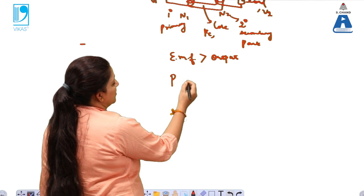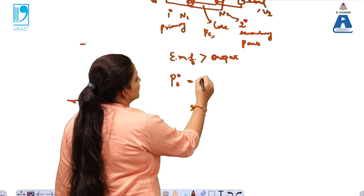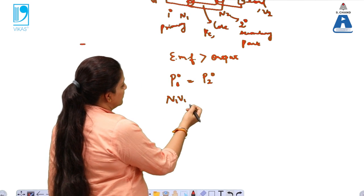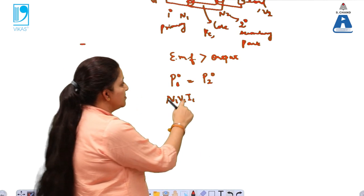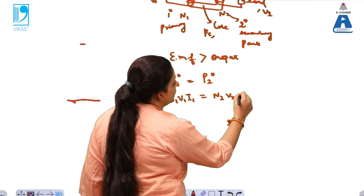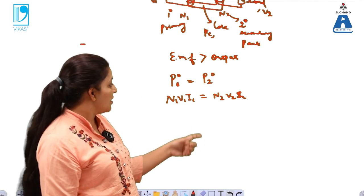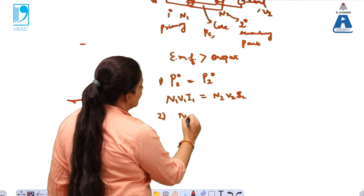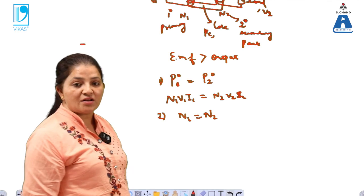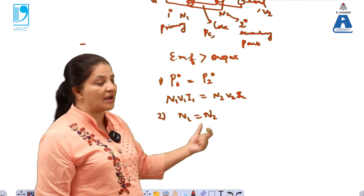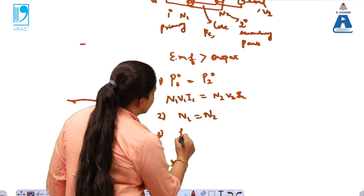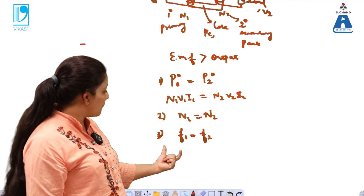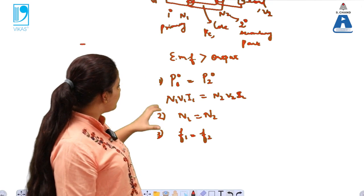In the case of an ideal transformer, the input power at the primary winding equals the power at the secondary winding: N1 × V1 × I1 = N2 × V2 × I2. The number of windings N1 equals N2, where N1 and N2 are the number of turns in the primary and secondary windings respectively. The frequency f1 must equal f2 — the input frequency equals the output frequency.